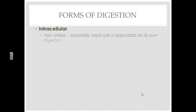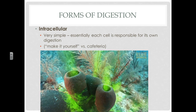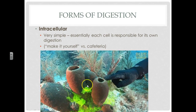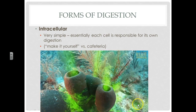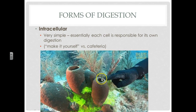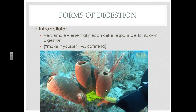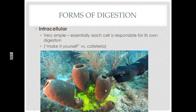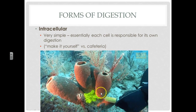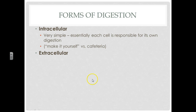So we've got a couple different kinds of digestion. The first one is called intracellular — this is a really simple one. Essentially, each cell does its own digestion. This is the make-it-yourself approach, and a perfect example of this are ocean sponges. They're not actually plants — they're actually animals. They are pumping in food and filtering out everything in there, but what makes it different is that every single cell is responsible for its own digestion. It has to make it itself. We, on the other hand, don't have that.